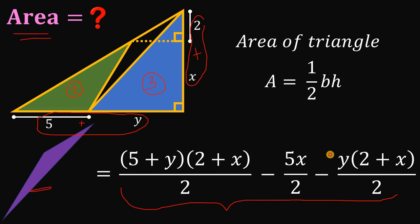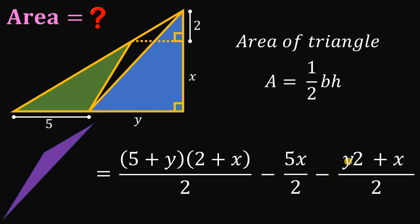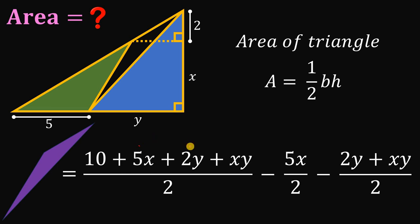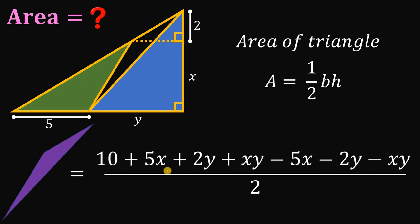Let's simplify. For the last term, we have y multiplied by 2 plus x, so distributing y gives us 2y plus xy. For the first term, 5 plus y multiplied by 2 plus x gives us 10 plus 5x plus 2y plus xy. Since all terms share the same denominator of 2, we can combine the fractions, giving us 10 plus 5x plus 2y plus xy minus 5x minus 2y minus xy.